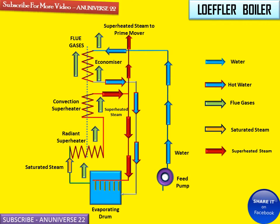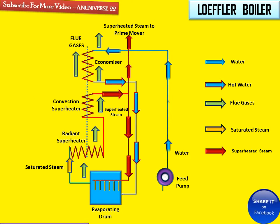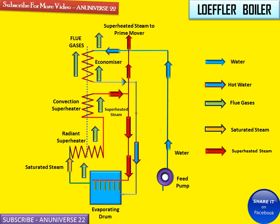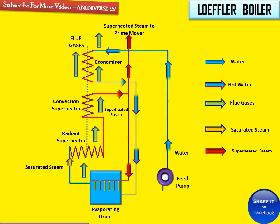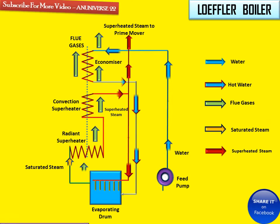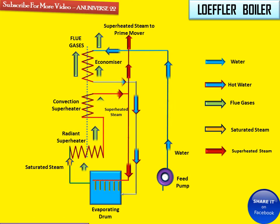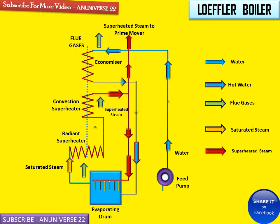As the feed pump starts to rotate, there is a continuous supply of water to the economizer, and water is supplied to the evaporating drum. From the evaporating drum, saturated steam goes to the radiant superheater, then from the radiant to the convection superheater. From the convection superheater, steam is supplied to the evaporating drum, and the remaining portion goes to the prime mover.